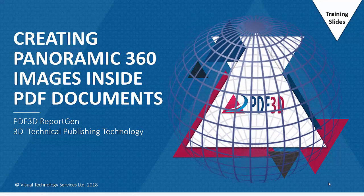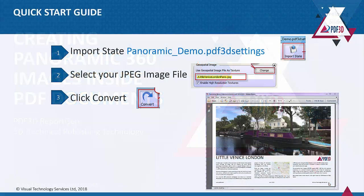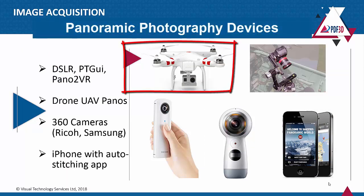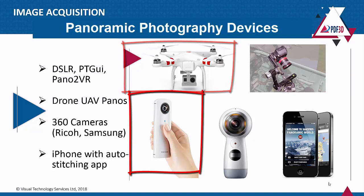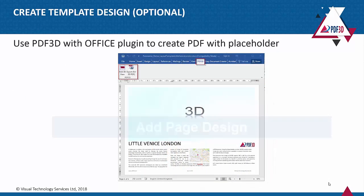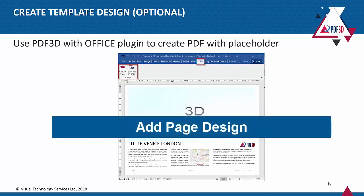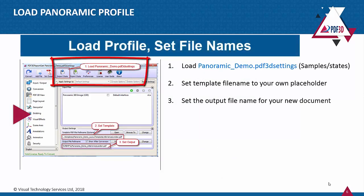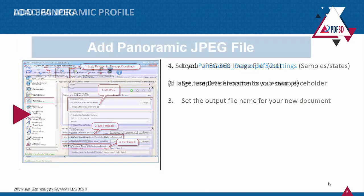This video describes creating panoramic 360 images inside PDF documents. Simply import a state file, select your JPEG image, and click convert. Panoramic images are typically generated by new photographic devices such as handheld sticks or others. These can be included in a background page design or report. First, load the profile to set up the panoramic scene characteristics.